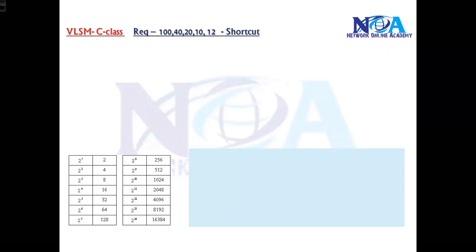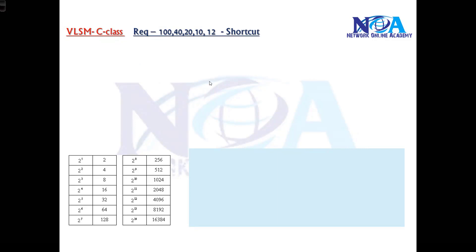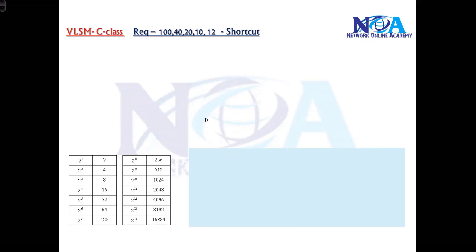We will look at the same example we covered in the previous section. In the previous section we did a VLSM example based on specific requirements, doing step-by-step calculations. Now that you're comfortable with subnetting calculations, I prefer to go with a shortcut, because at the end you need to know the range and the subnet mask — that's what you need when assigning IP addresses to devices.